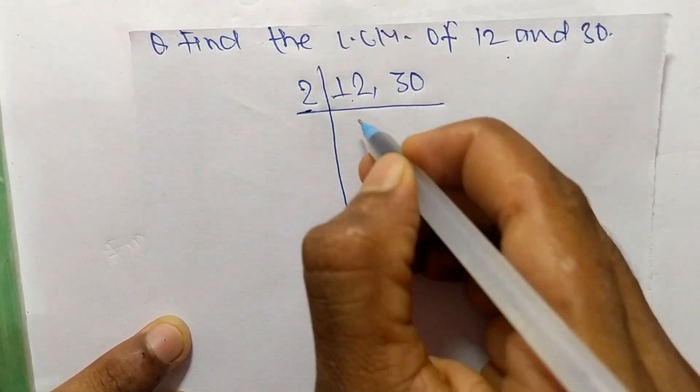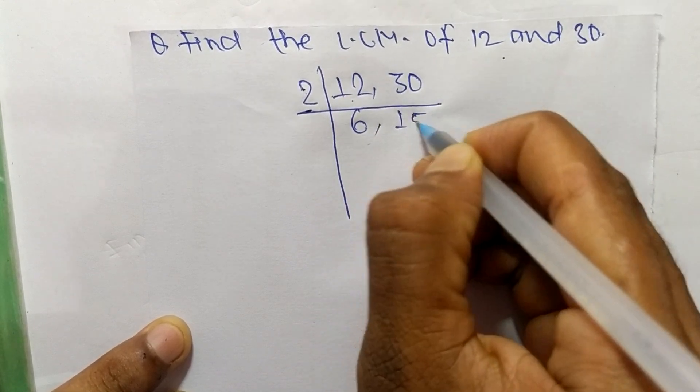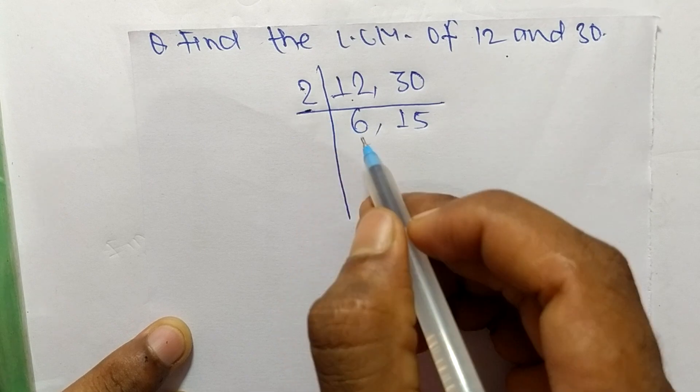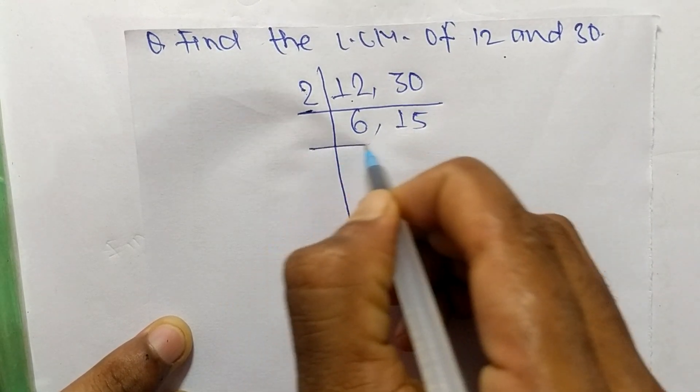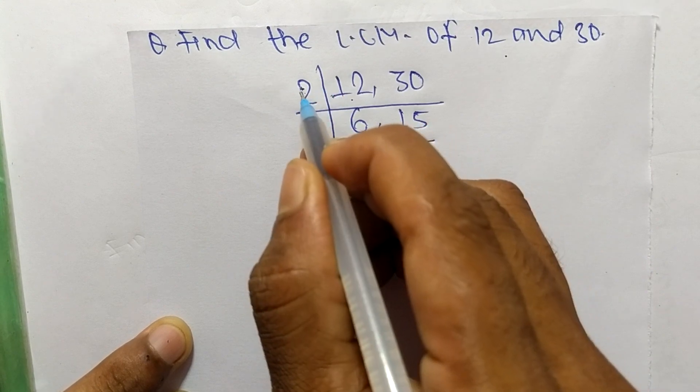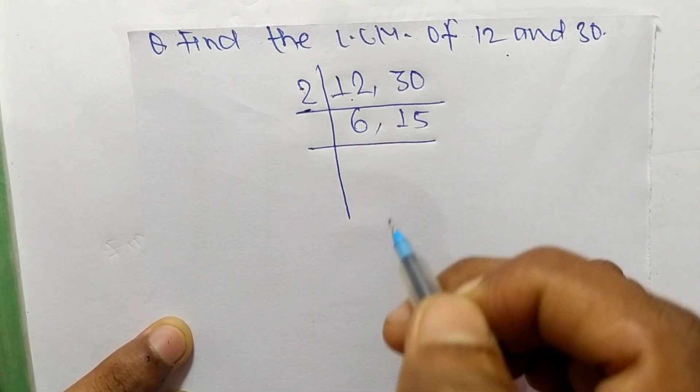2 times 6 means 12, and 2 times 15 means 30. So now 2 can divide 6, but can't divide 15. So now we choose the number slightly greater than 2 which can exactly divide 6 and 15.